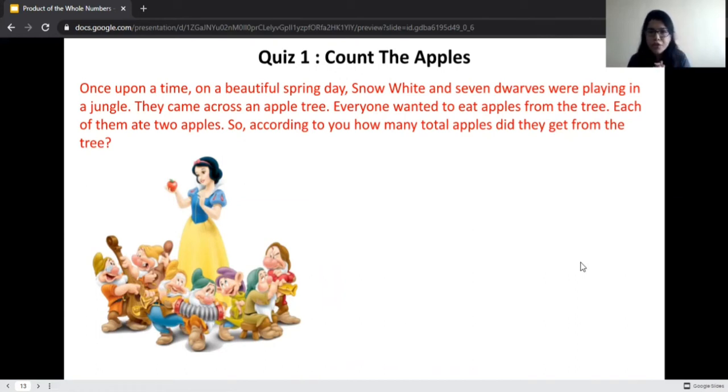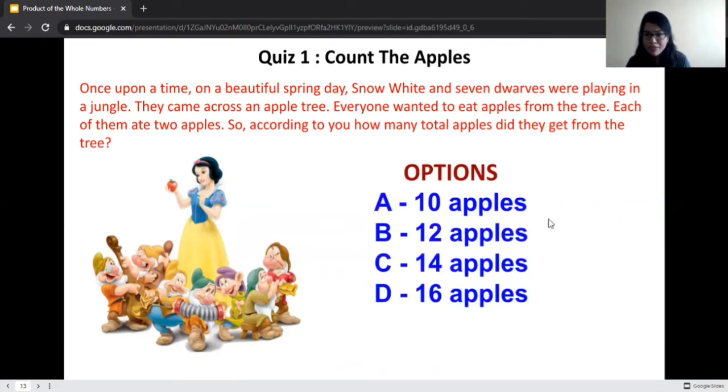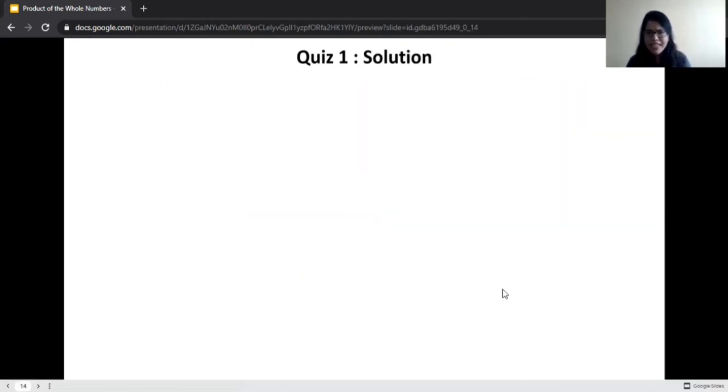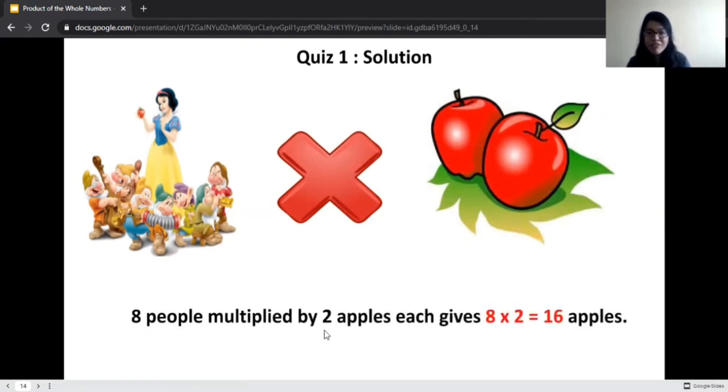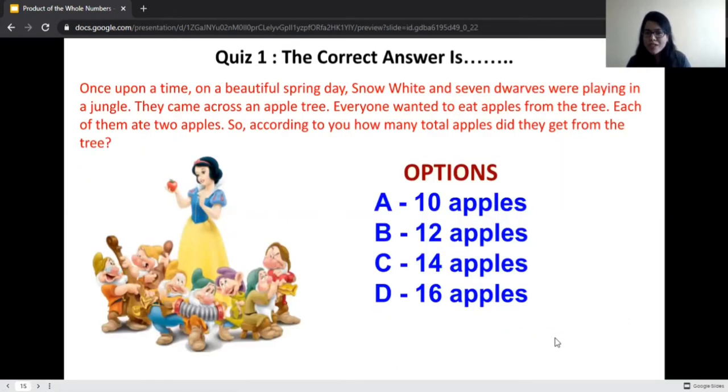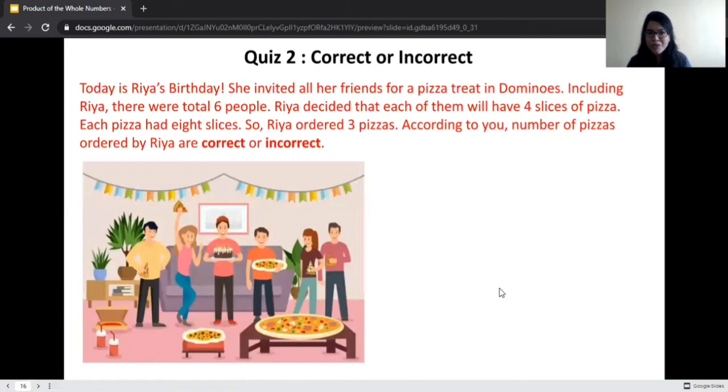According to you, how many total apples did they get from the tree? You have four options. First option is 10 apples or 12 apples, 14 apples or 16 apples. Try to think. Let's find a solution to this quiz. Including Snow White, there are eight people and each of them ate two apples. When we multiply eight people with two apples, we get eight multiplied by two, that is 16 apples. The correct option is D, 16 apples. Very good. Now let's go to our next quiz.